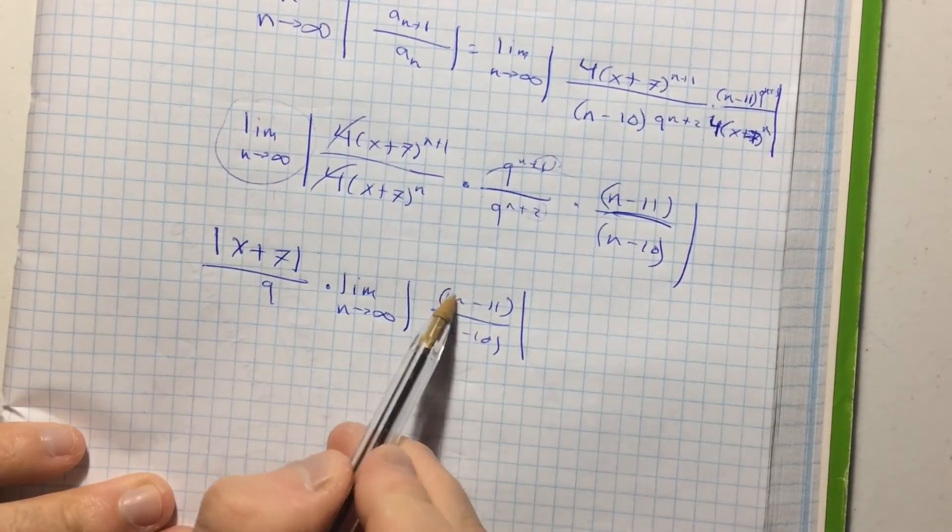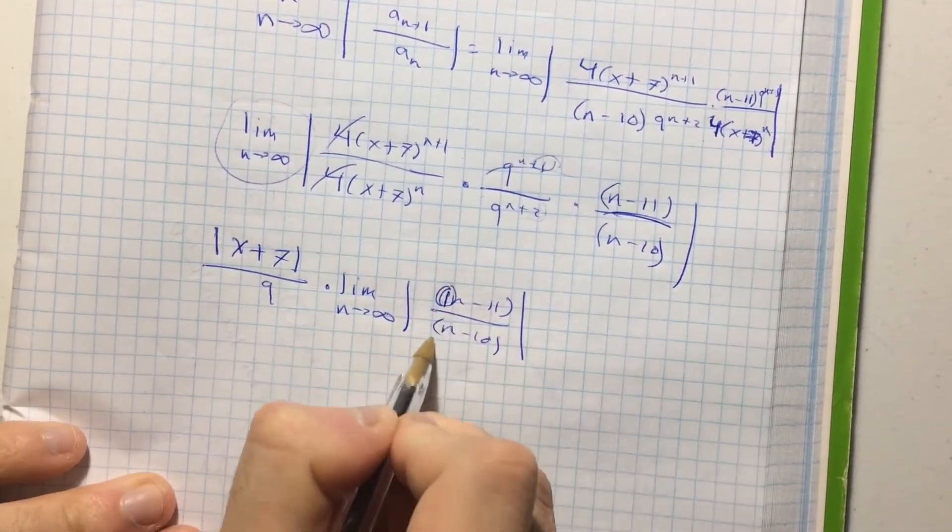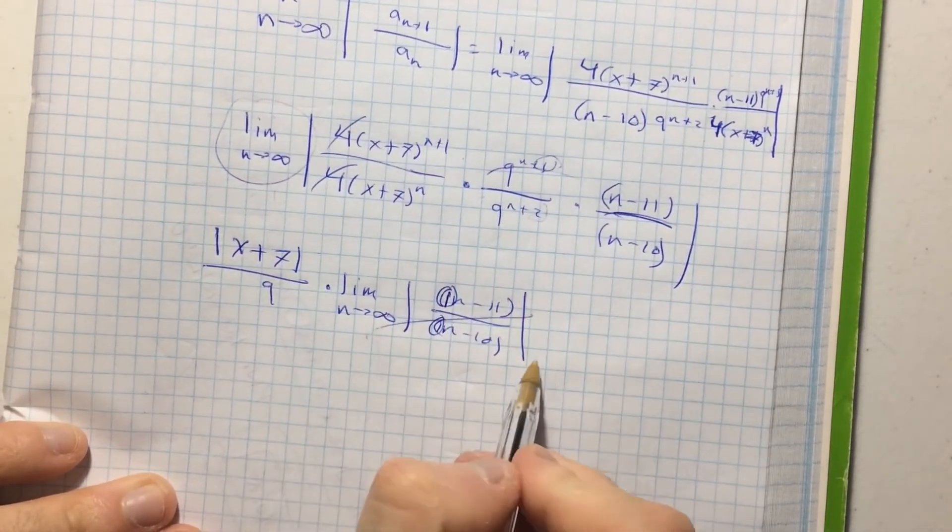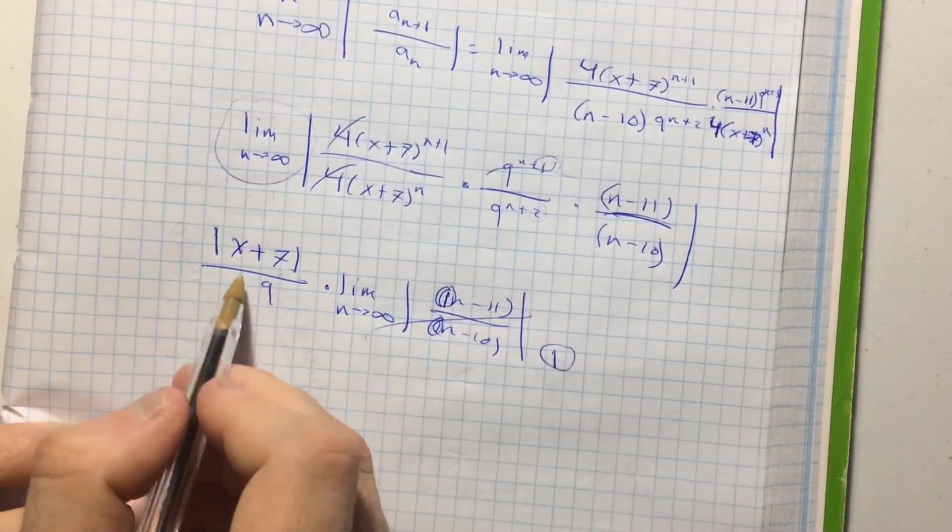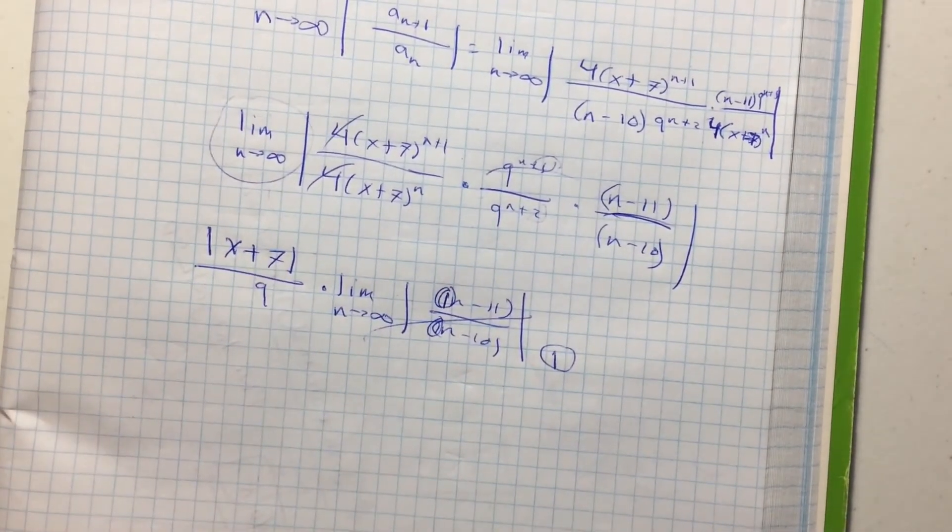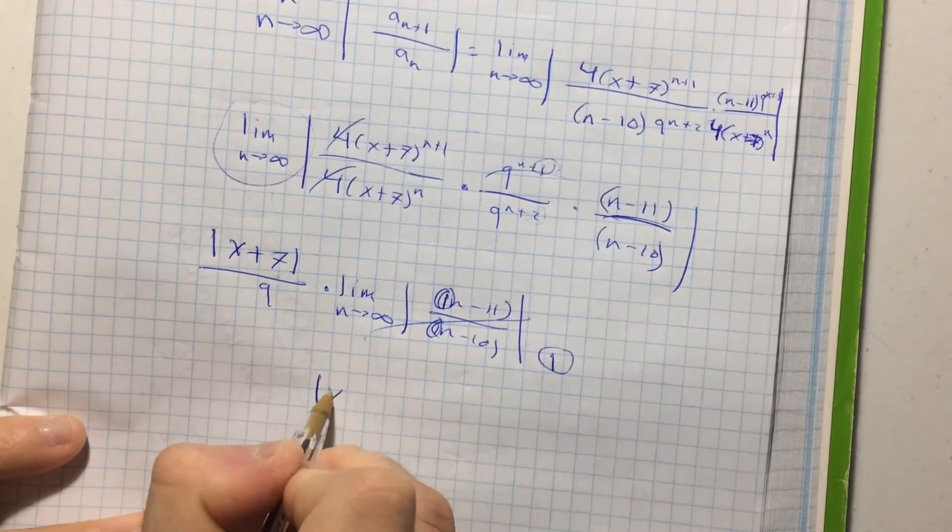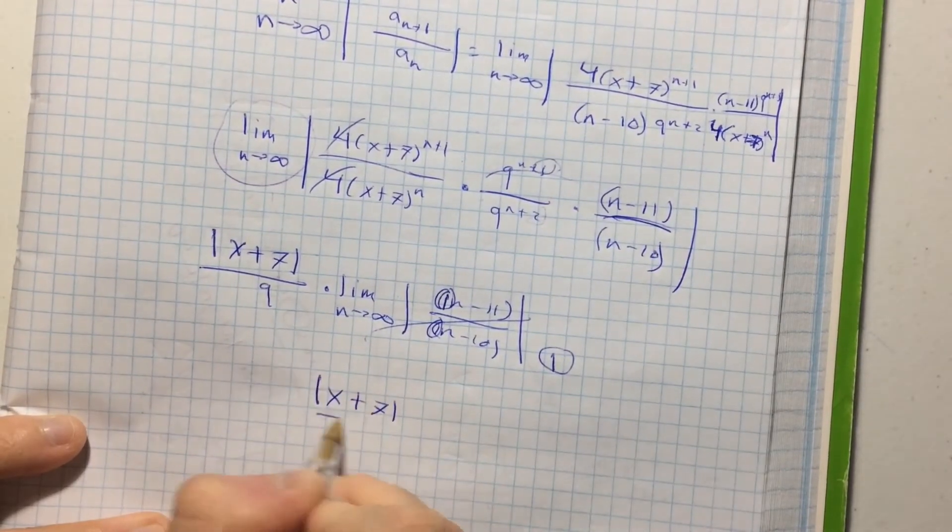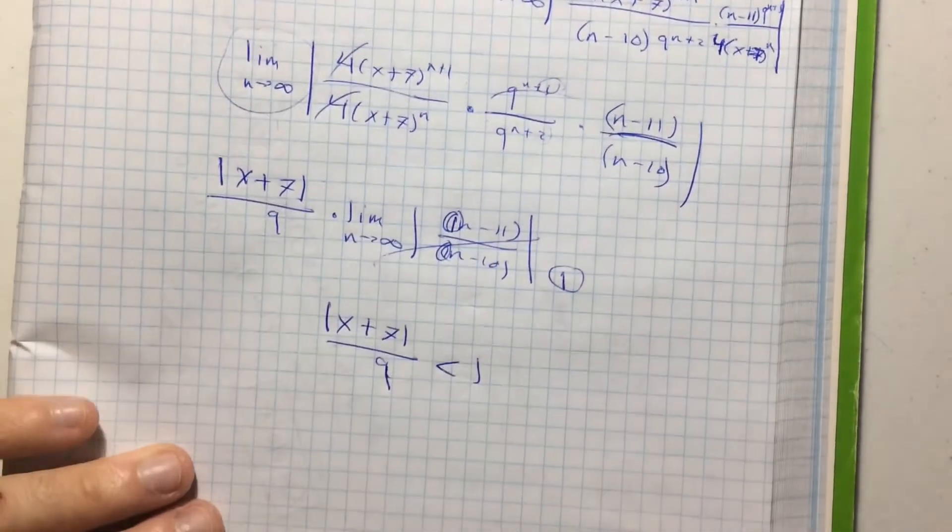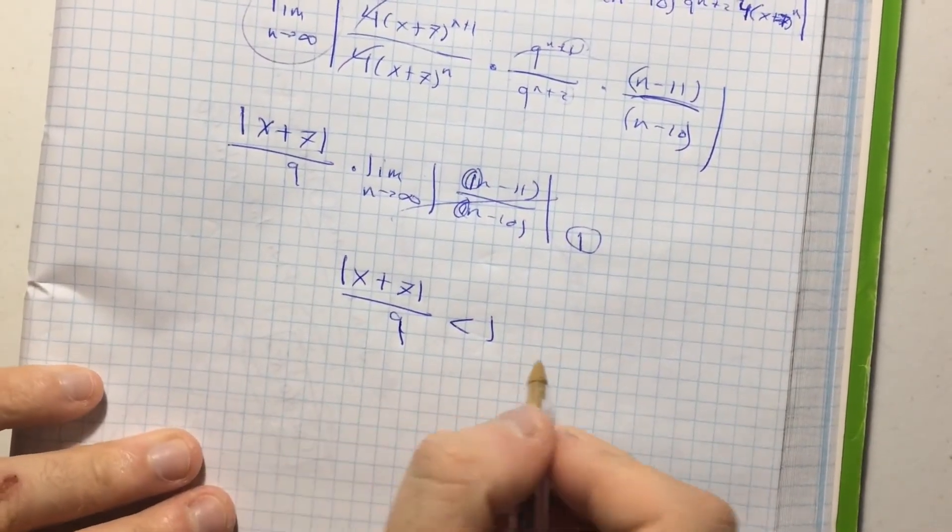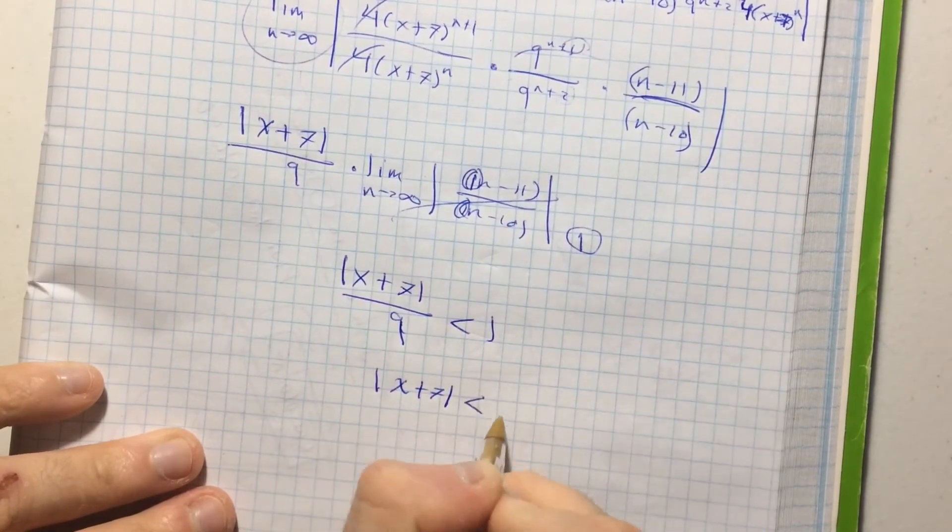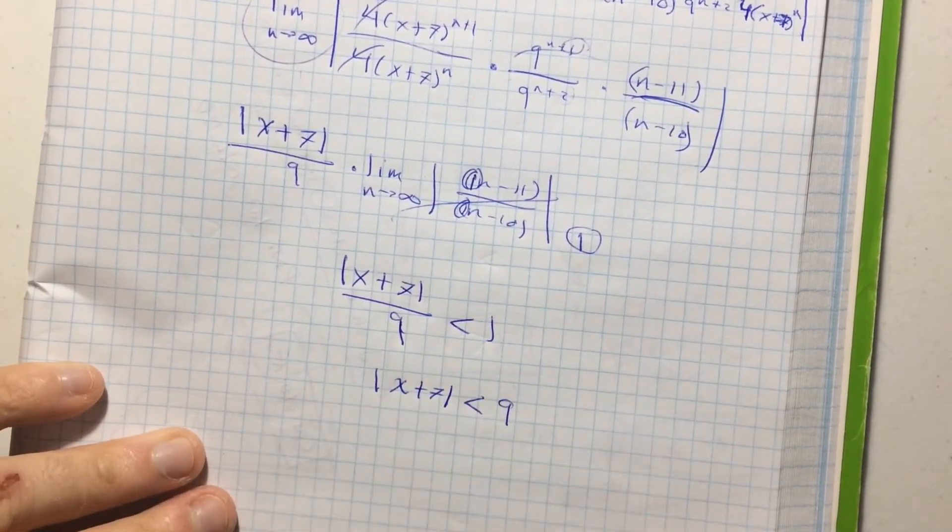So let's continue. Well, the ratio of the highest per hour variable is 1 over 1. So that's just the limit times... this limit goes to 1. But the x plus 7 over 9 times 1 is just the absolute value of x plus 7 over 9. Which means that the absolute value of x plus 7 over 9 is strictly less than 1 for this to have an opening interval of convergence. Which means that the absolute value of x plus 7 has to be strictly less than 9.